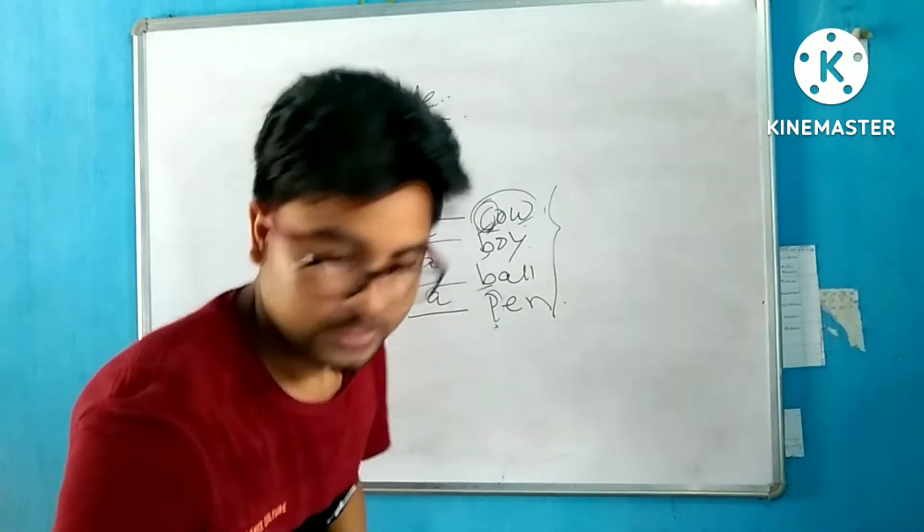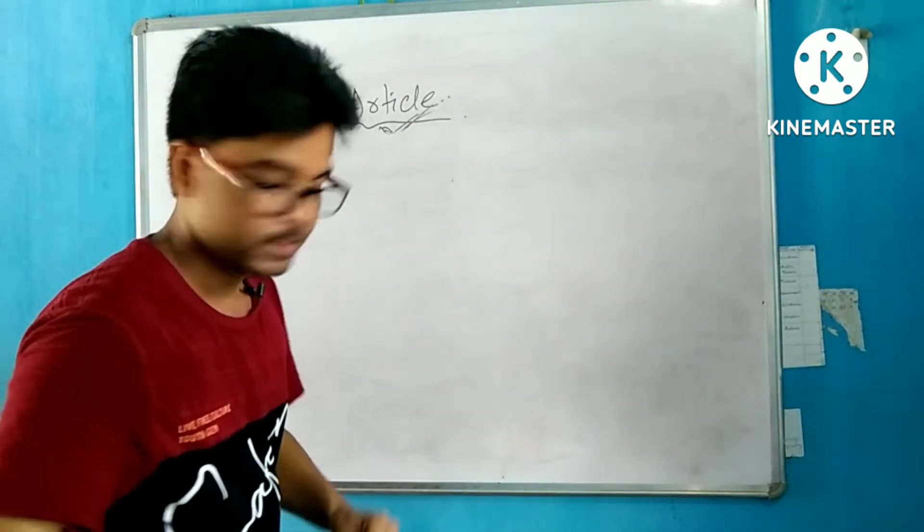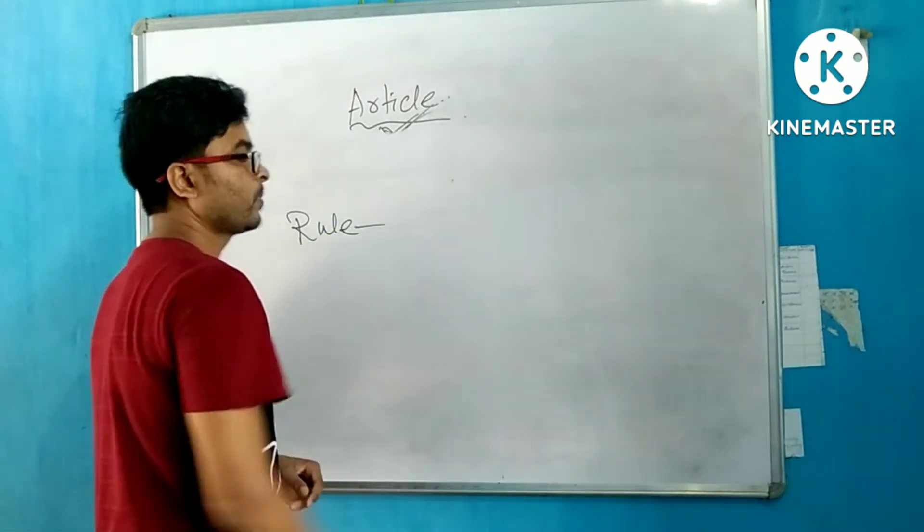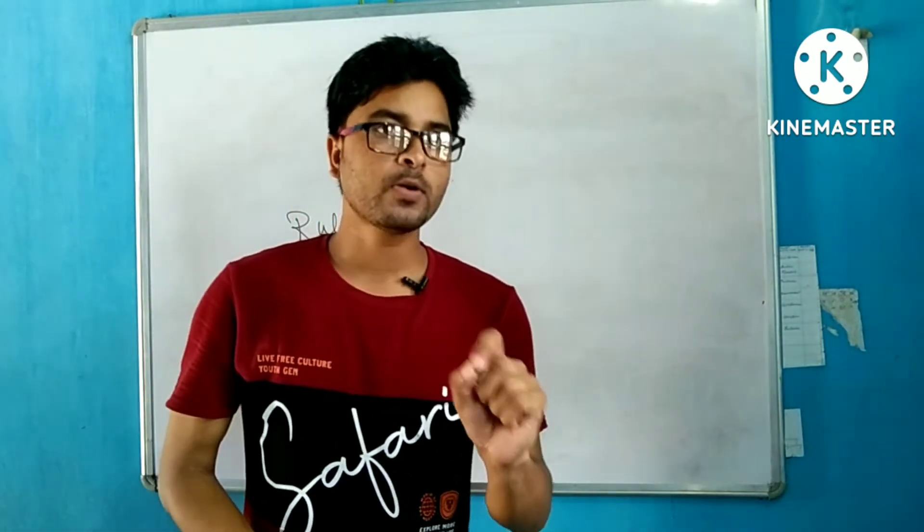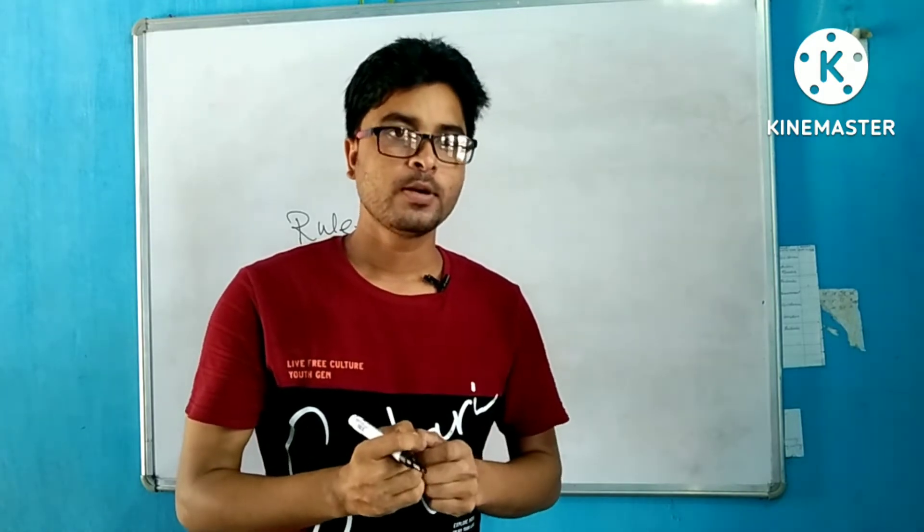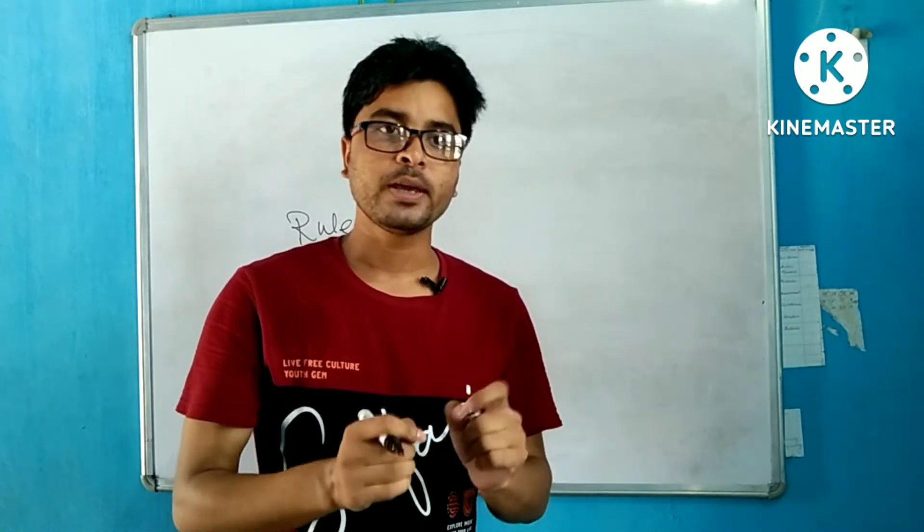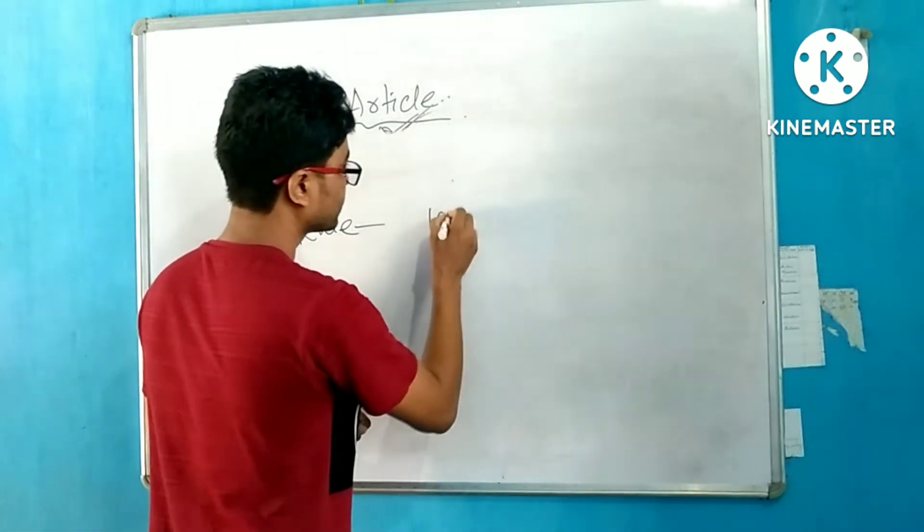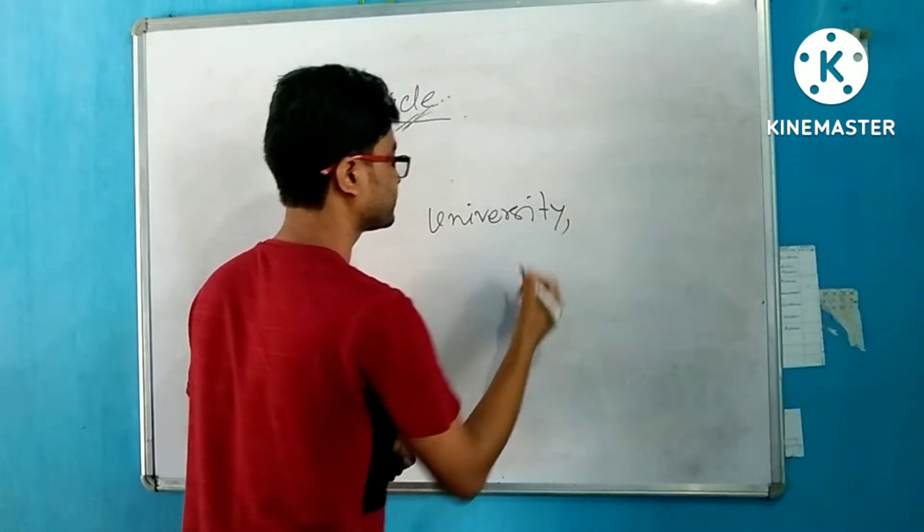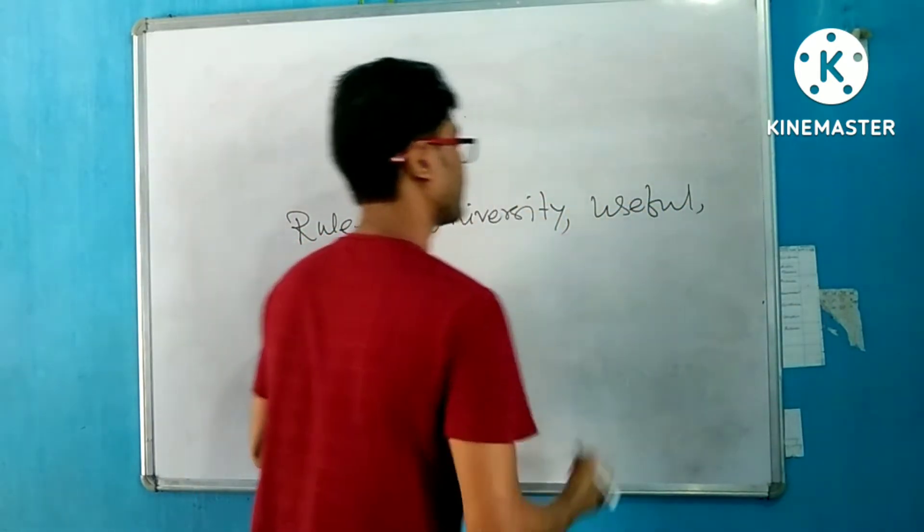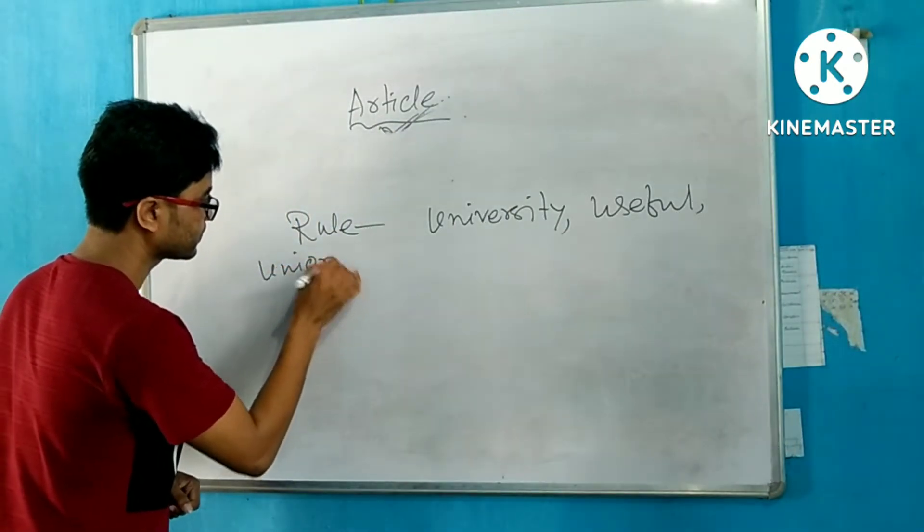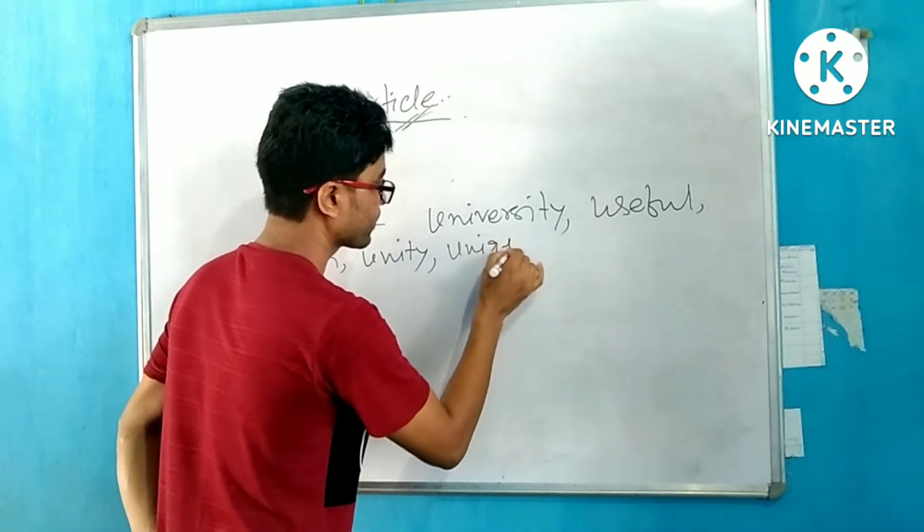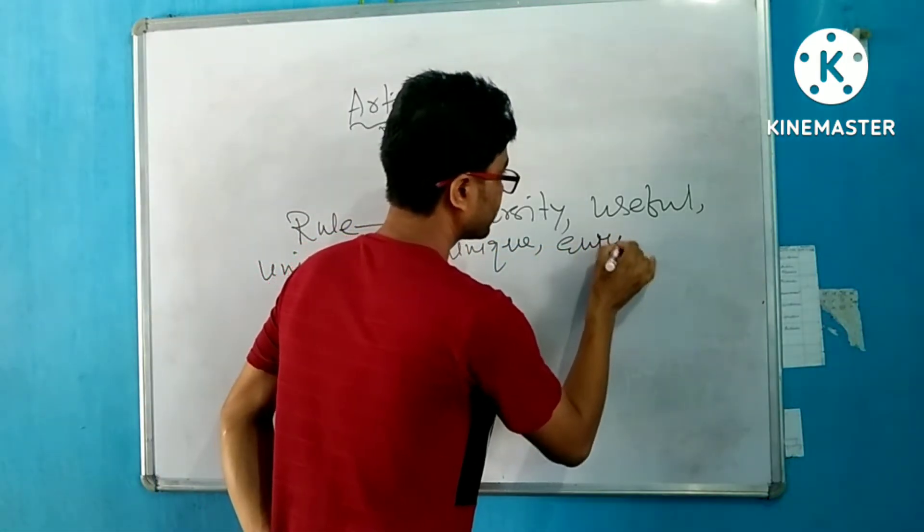Rule three: When a word starts with vowel U but is pronounced with a 'you' sound, we use A article. Examples: university, useful, union, unity, unique, European.